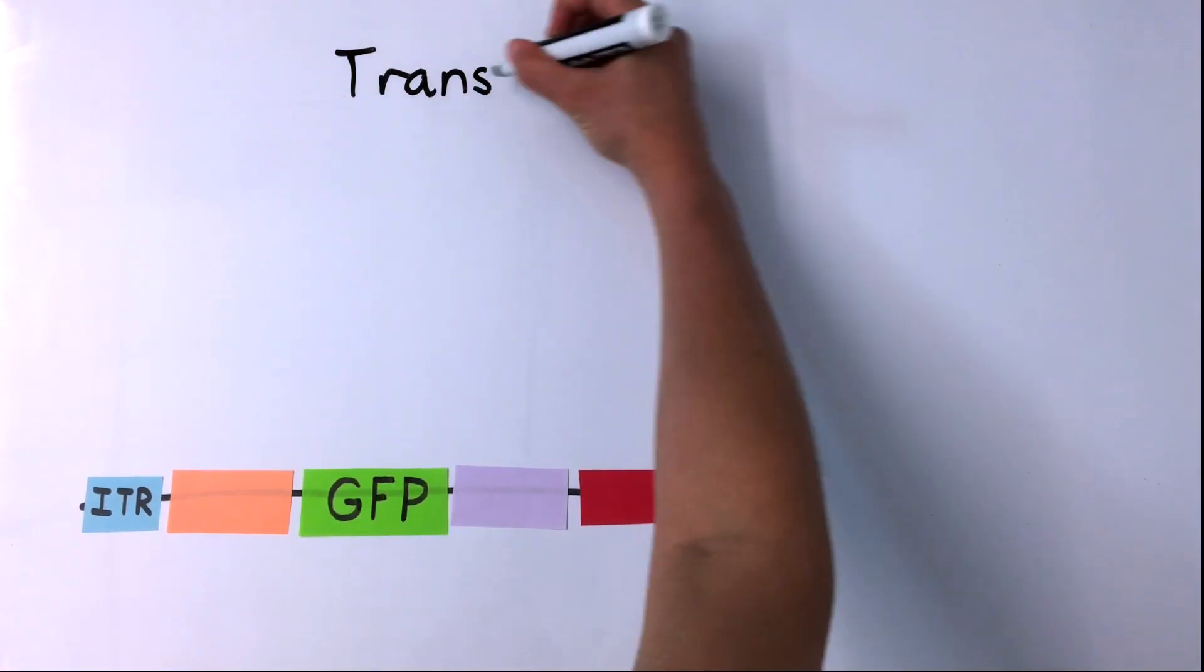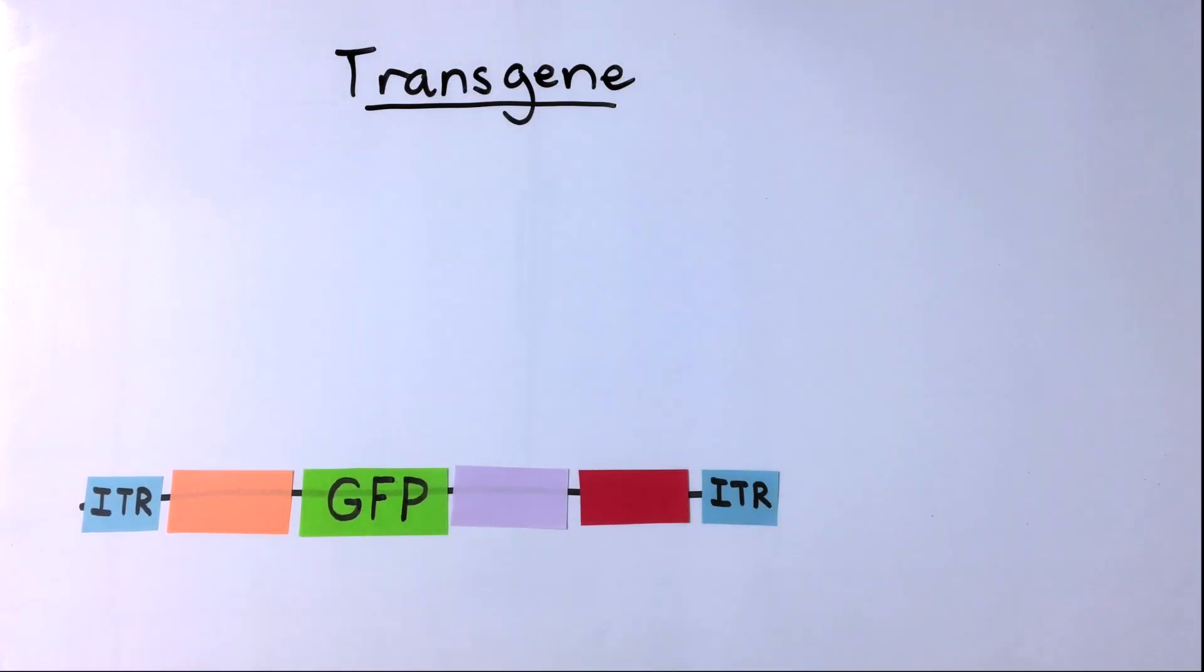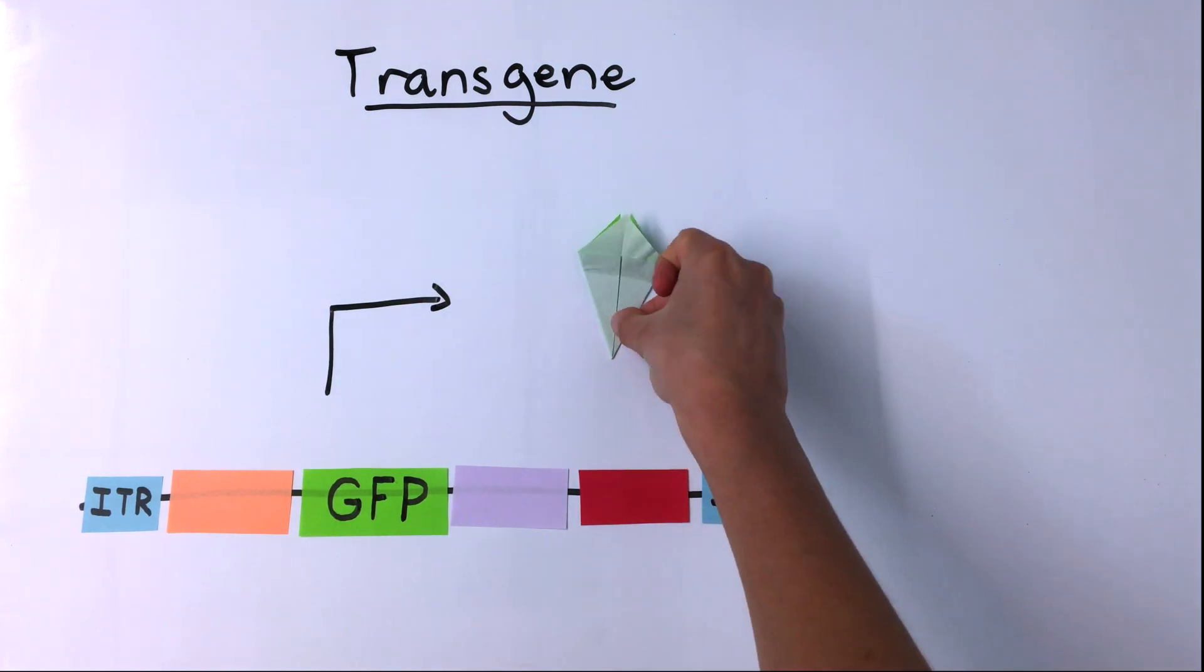This region within the ITRs will contain several elements. The most important is usually your transgene. This is the gene you're studying and want to get expressed, such as the fluorescent protein GFP.